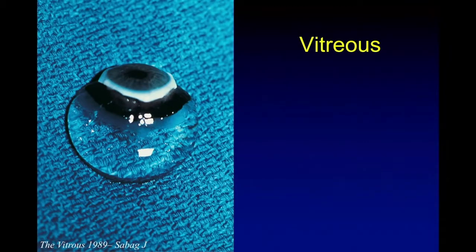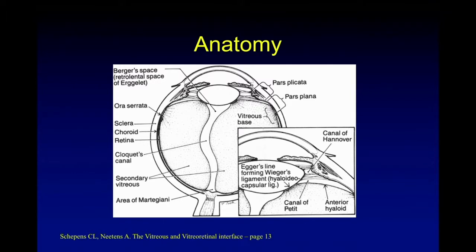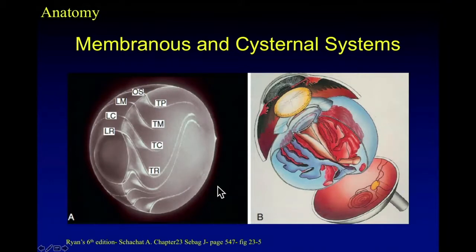As you all know, vitreous is transparent and clear, and for that reason, the anatomy of vitreous is not very well known. Just behind the lens capsule, we have a barrier space, which normally cataract surgeons don't encounter unless they break the posterior capsule. Between the posterior capsule and the disc, there is the colloquial canal, and around the disc, we have the area of Martegiani in the vitreous cavity. Although vitreous looks clear, there are structures there — cisternal systems — so it's not just one jelly there like jello.